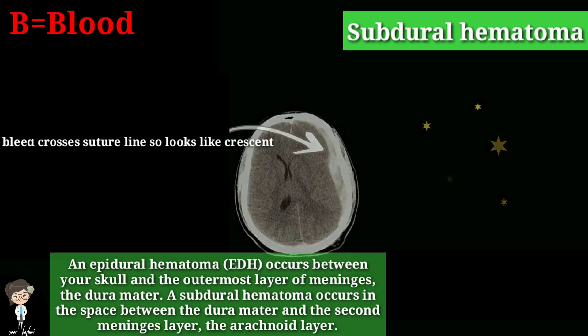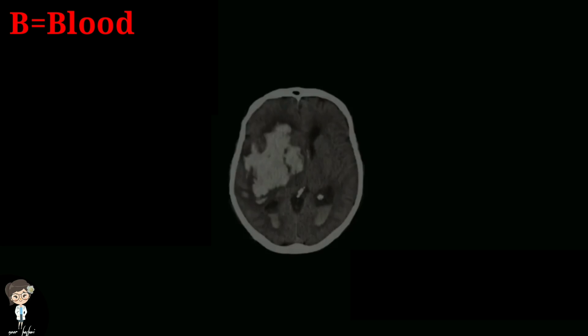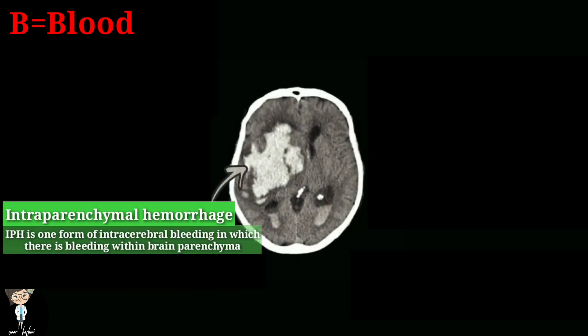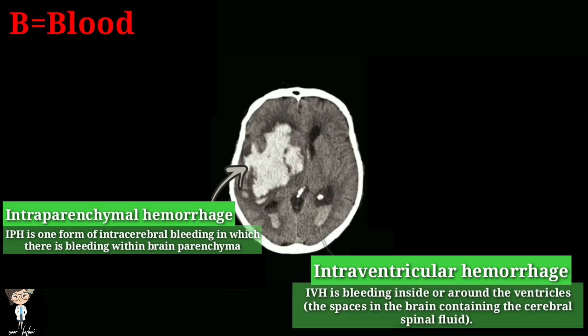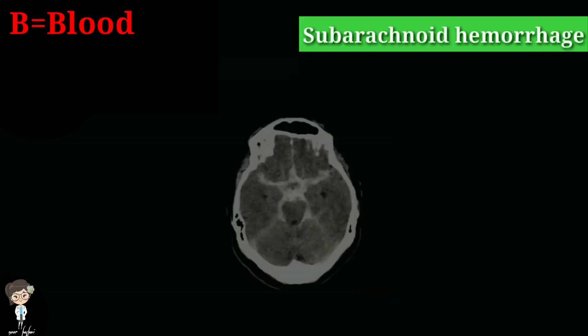Now we will see intraparenchymal and intraventricular hemorrhages. Intraparenchymal hemorrhage, as the name indicates, is bleeding in brain parenchyma, while intraventricular hemorrhage is bleeding around ventricles, which is the space in the brain containing cerebrospinal fluid. The most common cause of intraparenchymal hemorrhage is hypertension, while primary intraventricular hemorrhage is rare, but causes include intravascular tumors and aneurysms.